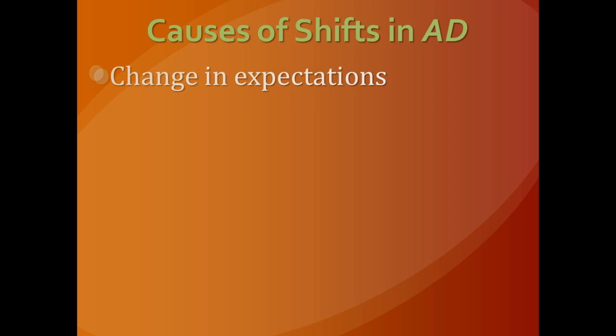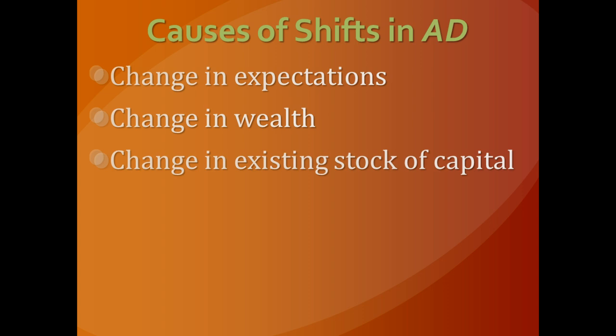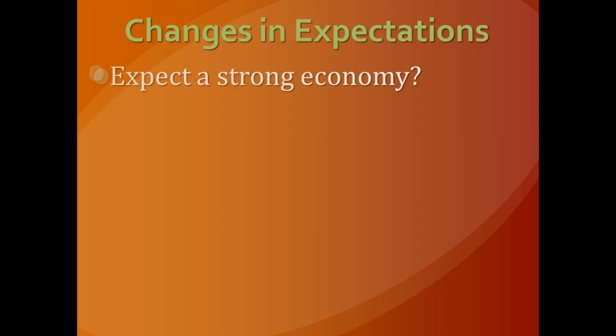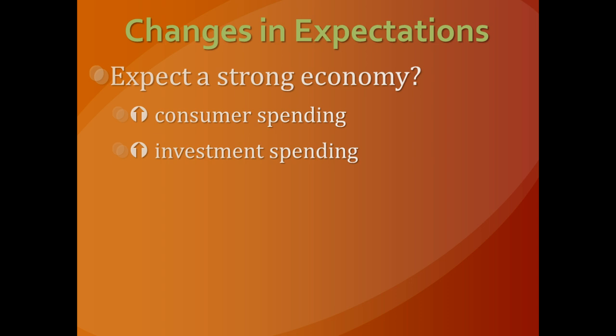When it comes to the causes of shifts in aggregate demand, there are several reasons. One is a change in the expectations of consumers — if people expect a strong economy, that has implications for their consumption patterns. If you expect a strong economy, consumer spending will increase beyond what it would have been regardless of the price level, and there'll be more investment spending. So if you expect a strong economy, consumption increases and we see a right shift in aggregate demand. The opposite would be true if we expected a weak economy.